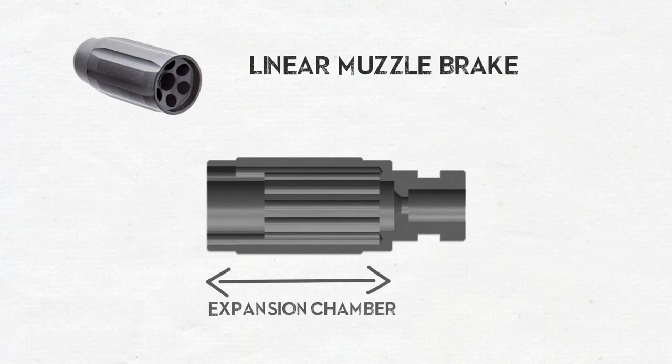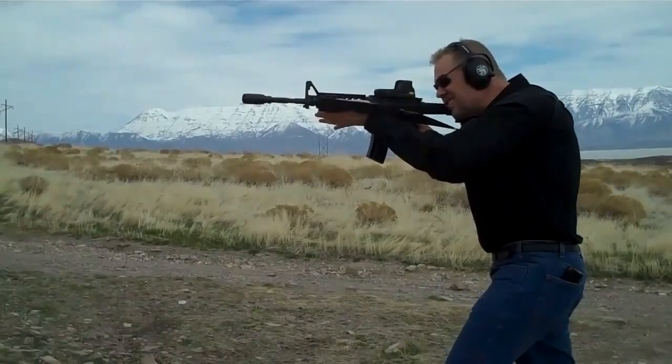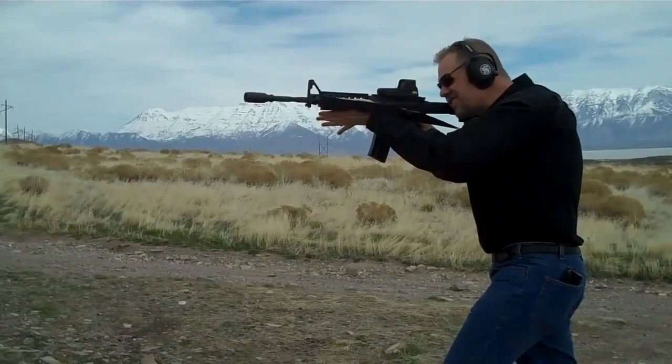A linear muzzle brake or linear compensator works in the same way. It directs combustion gases forward but at a reduced speed.